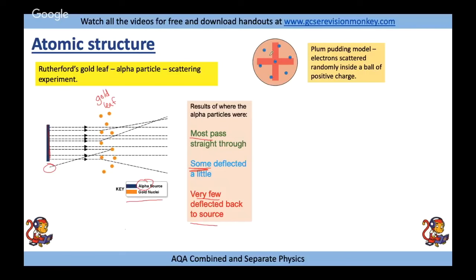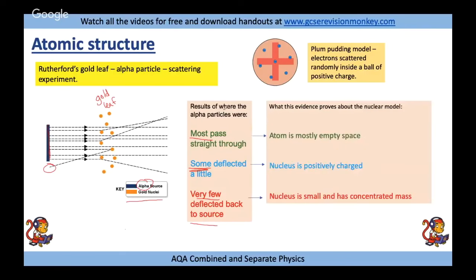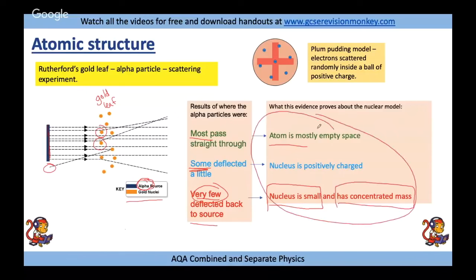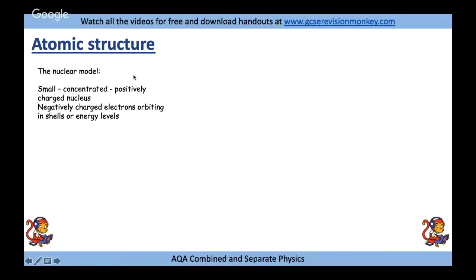This disproved the plum pudding model. The fact that most passed straight through means the atom is mostly empty space. Some being deflected slightly is explained because positive alpha particles are repelled by the positively charged nucleus when they get close. The very few that rebounded back tell us the nucleus is very small, tiny, and has a concentrated mass. This is the nuclear model: mostly empty space, small positively charged nucleus with concentrated mass.